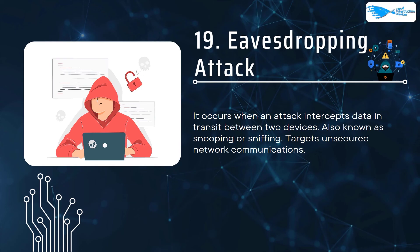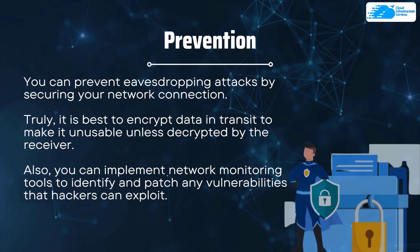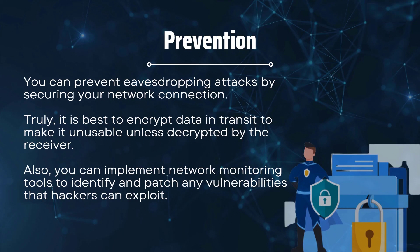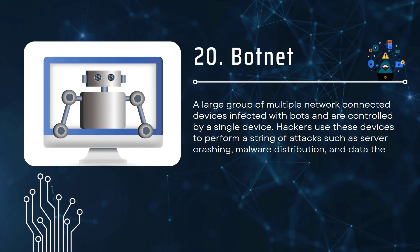Number nineteen is eavesdropping attack, which occurs when an attacker intercepts data in transit between two devices — also known as snooping or sniffing. The main targets are unsecured network communications. Prevent it by securing your network connection, encrypting data in transit to make it unusable unless decrypted by the receiver, and implementing network monitoring tools to identify and patch vulnerabilities.